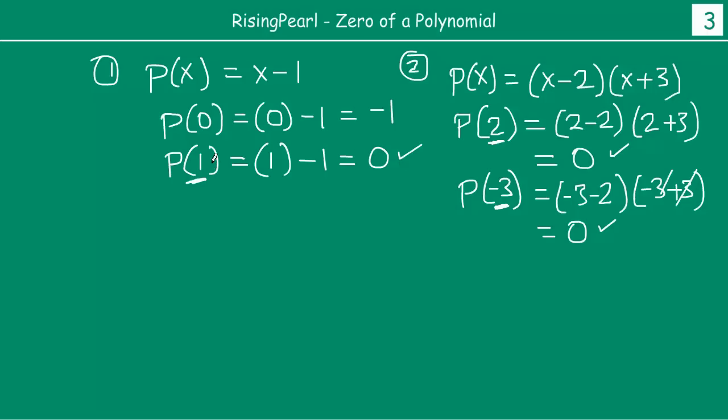Then we say this value of the variable, usay kehte hain hum the 0 of a polynomial. Matlab ki aisi value jo poore polynomial ko zero bana de, us value ko hum kehte hain 0 of the polynomial. So in this case P(1), so the 1 hai is the 0 of the polynomial, this 1. And is polynomial mein we see there are 2 zeros. Ek hai x is equal to 2 will make this polynomial 0, and then x is equal to minus 3 is also making it 0.